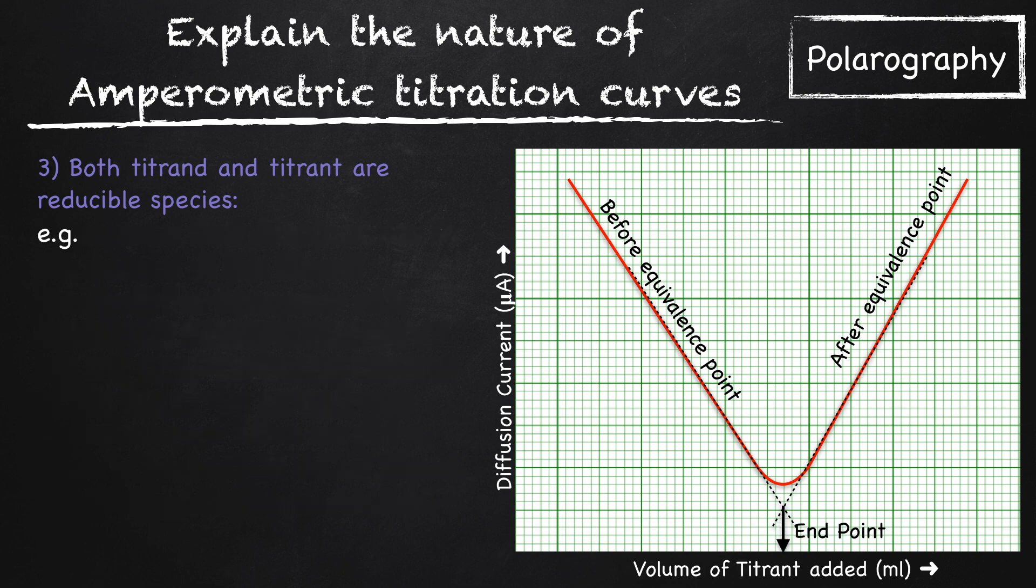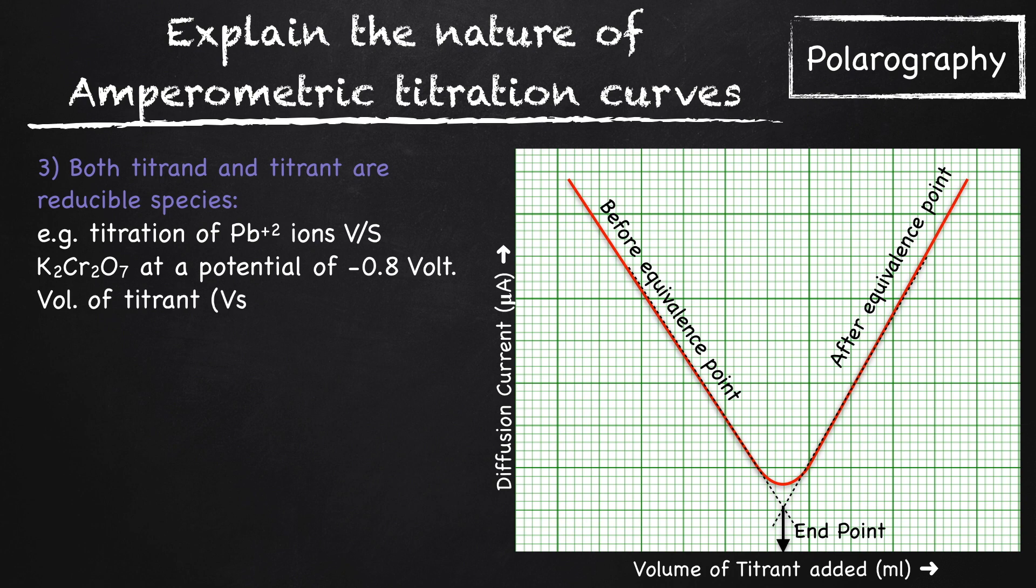For example, titration of lead ions versus dichromate ions at the potential of -0.8V versus saturated calomel electrode. So Pb²⁺ combines with potassium dichromate producing lead chromate plus two potassium ions are liberated.